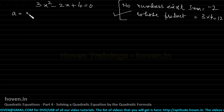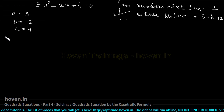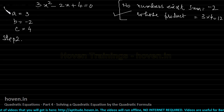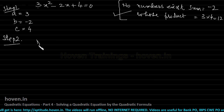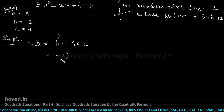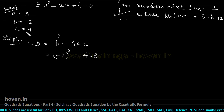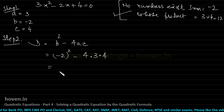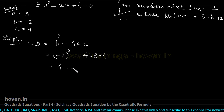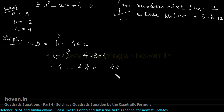Step 1: isolate a = 3, b = -2, and c = 4. Step 2: find d = b² - 4ac = (-2)² - 4(3)(4) = 4 - 48 = -44. As we already know, if d is less than 0, no solution exists.